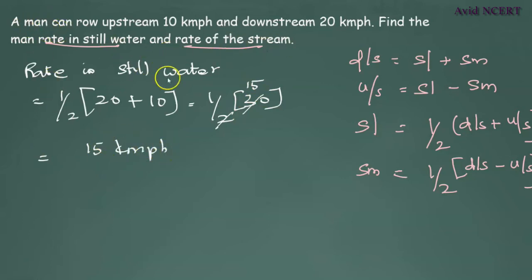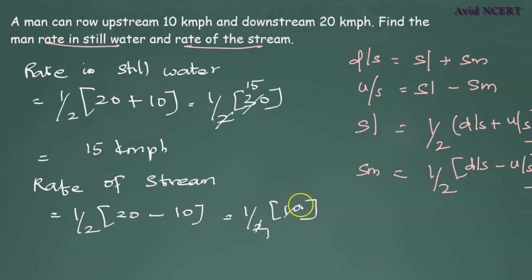Now rate of the stream. To find rate of stream, the formula is one-half times downstream minus upstream. Downstream here is 20 minus upstream is 10, which equals one-half times 10, which is 5.